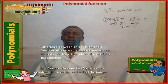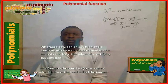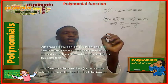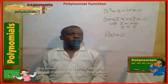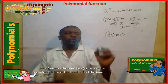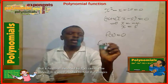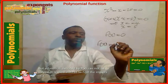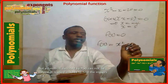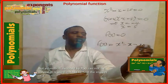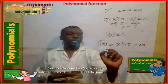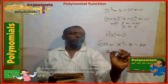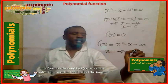This implies that x equals minus 4 and x equals 5. But a function, denoted by f, cannot be solved. It is used instead to find the images of x. The values where f(x) = 0 are called the zeros of the function. Example: f(x) = x squared minus x minus 20 = 0. The zeros of this function are x = minus 4 and x = 5.